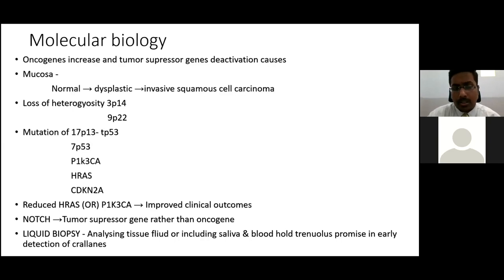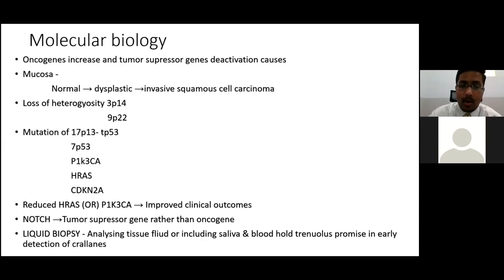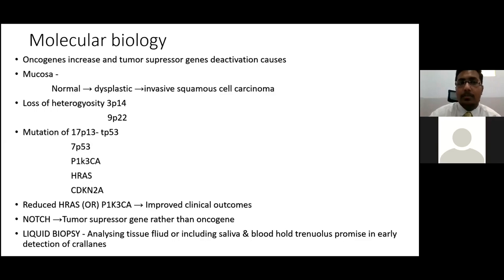The notch pathway, which acts as an oncogene in other malignancies, acts as a tumor suppressor in the oral cavity. Liquid biopsy analyzing tissue fluid, saliva, and blood shows promise in the early detection of carcinomas and recurrent carcinomas.